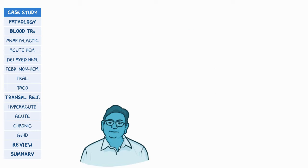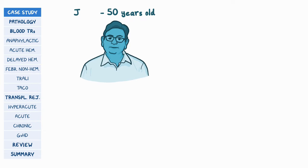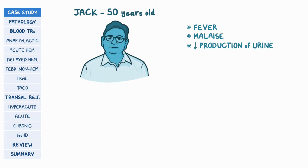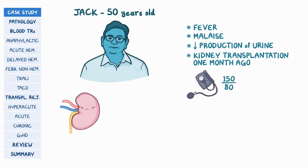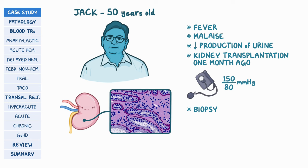Some days later, you see 50-year-old Jack, who's complaining of fever, malaise, and decreased production of urine for the past two days. On further questioning, Jack tells you that he underwent a kidney transplantation one month ago. Upon examination, he has high blood pressure at 150 over 80 mmHg. You perform a biopsy of his transplanted kidney, which reveals a dense lymphocytic infiltrate.